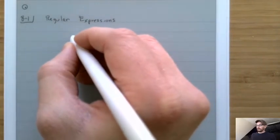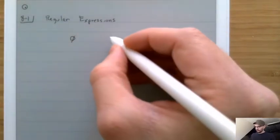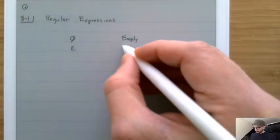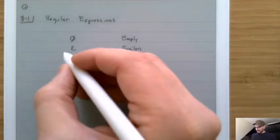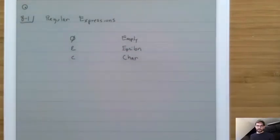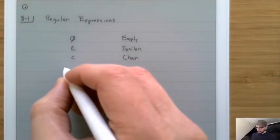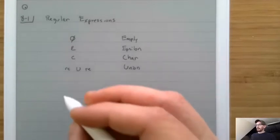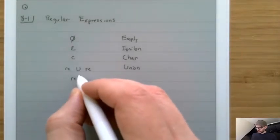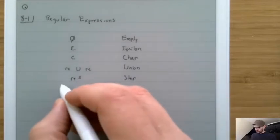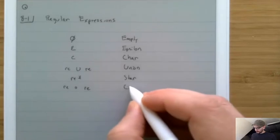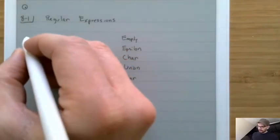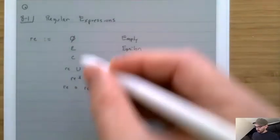We saw that we can have the empty set, which we write down as null or empty. We had epsilon. We had single characters — those were the singleton things. We had the union operation, so we had a regular formula union with another regular formula. We showed star, so we can have a star. Then there was the concatenation (circ) operation. These six different ways of writing down a regular language are called regular expressions, which we abbreviate as RE — one of these six possibilities.